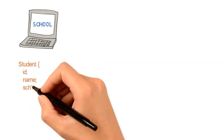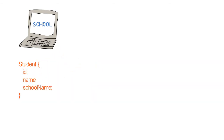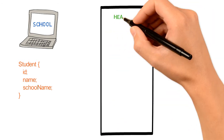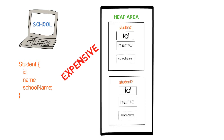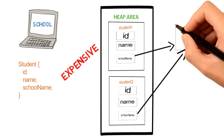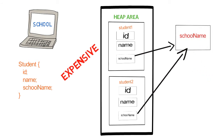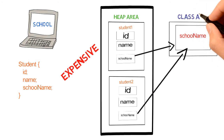Each student has properties like ID, name, and school name. Now these properties or objects are going to take memory in the heap area. Heap memory is expensive with regards to performance. Each object will be stored in heap memory and ID, name, and school name are all going to take up memory there. Now ID and name are going to be different for different students, but school name is going to be common for every student.